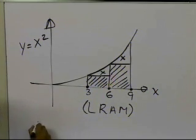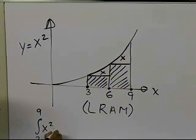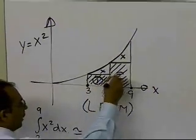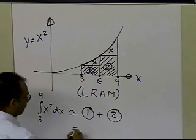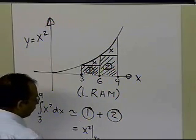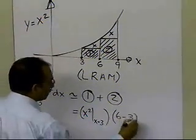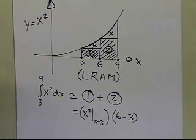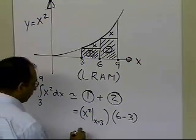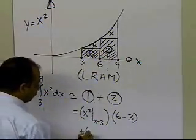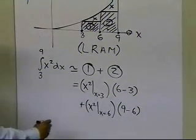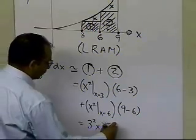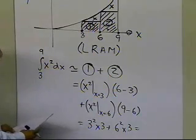Let's calculate the area under the curve from 3 to 9 of x squared. It will be approximately equal to area 1 plus area 2. Area 1 is x squared at x = 3, times the width (6 minus 3). Area 2 is x squared at x = 6, times the width (9 minus 6). So this gives us 3 squared times 3, plus 6 squared times 3, which equals 135.